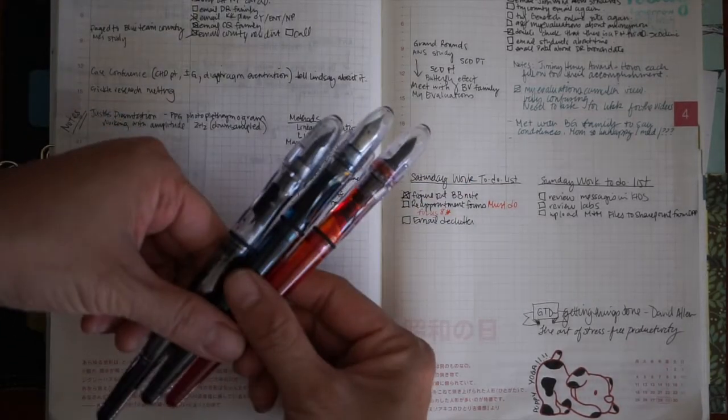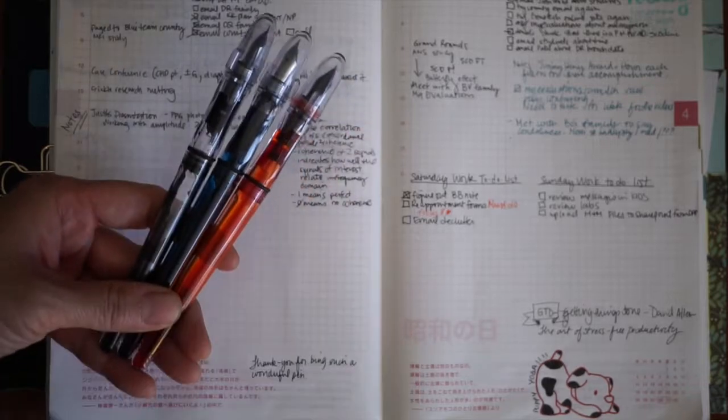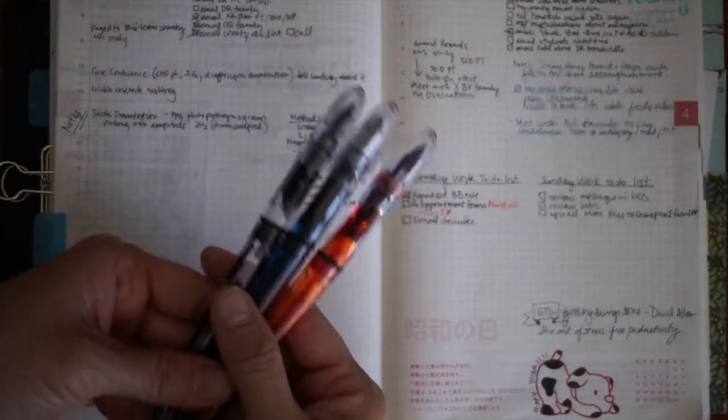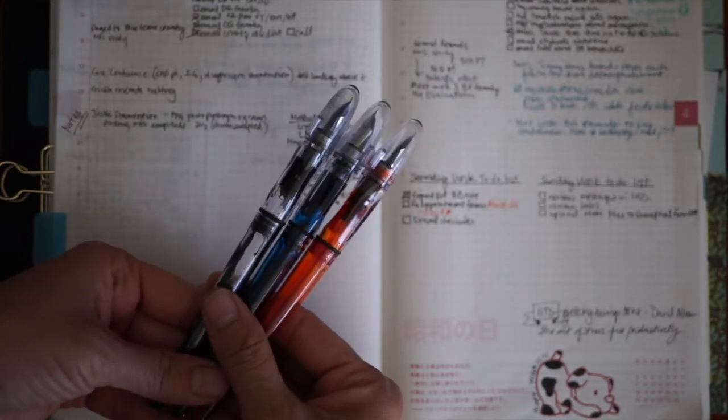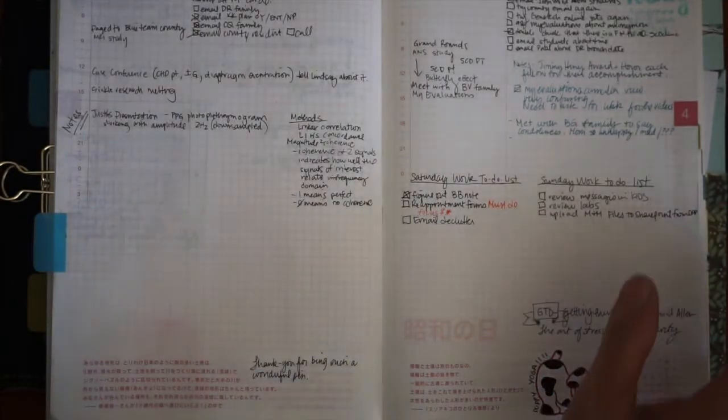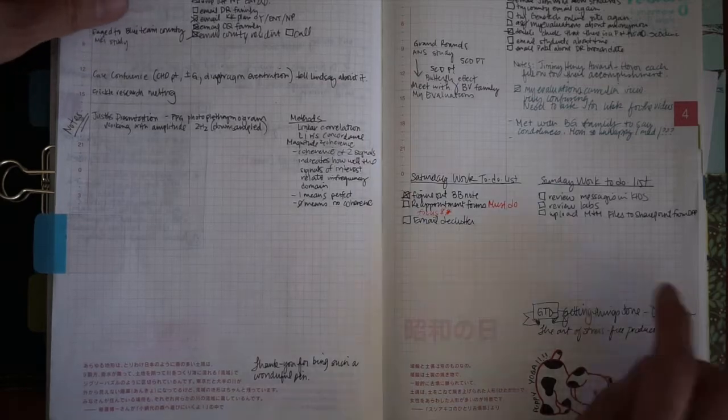So I think what I'm going to try to do now since I do have all these different colors, and these are only three colors, I probably have something like, because I got these sampler packs, I think there's seven different colors - black and then six other colors that I can use.